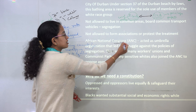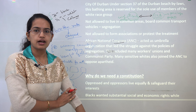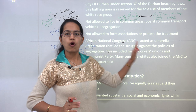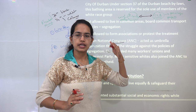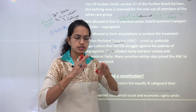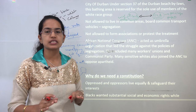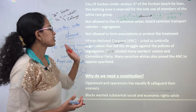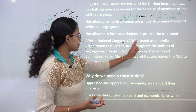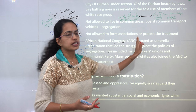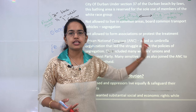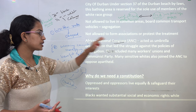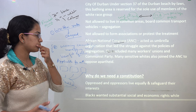The African National Congress was one of the major bodies that worked for the removal of racial discrimination — the apartheid. The ANC was further united with the workers' union and the Communist Party.